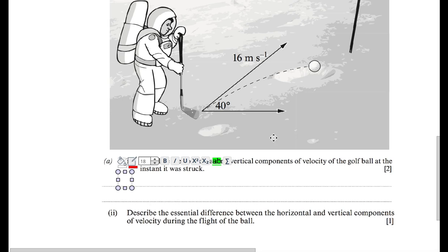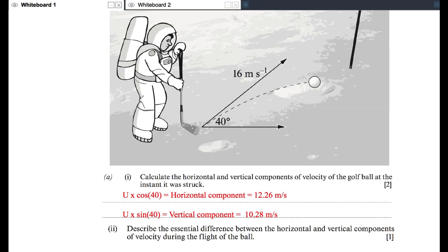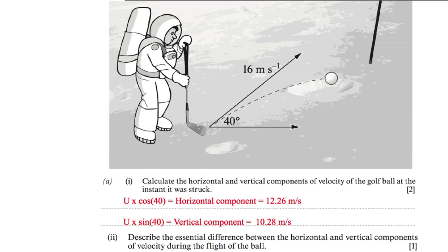If we first look at the horizontal component, which is this component here, then you can see that we have to take the cosine component. If we call the initial velocity u, we would say u times cos 40 is equal to the horizontal component. Then on the other hand, the vertical component, which is this part here, we would say that is u times the sine component, so sine 40. And that is equal to the vertical component. The horizontal component is equal to 12.26 meters per second and the vertical component is equal to 10.28 meters per second. A good way to test this is correct is using Pythagoras. So the square root of 12.26 squared plus 10.28 squared should equal 16 meters per second.